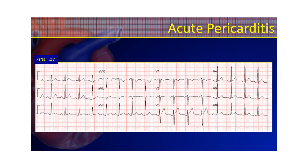Here's another good example. You do see that Spodick's sign — the downward trending of the baseline of the isoelectric line — from the J-point all the way down into the PR segment. You have concave ST elevation, albeit not that impressive on this 12-lead. But you might even note a little bit of PR segment depression there, certainly in lead two, indicating a more viral pericarditis. And that ST elevation, albeit not that significant, is more indicative of an acute pericarditis.